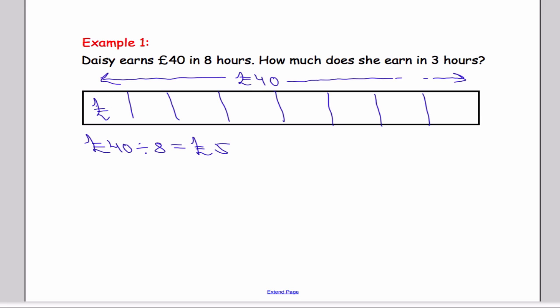Well, £40 divided by 8 is £5. So what we can say is, each hour, Daisy is making £5. We can double check that by ensuring that the total from all these boxes adds up to £40.